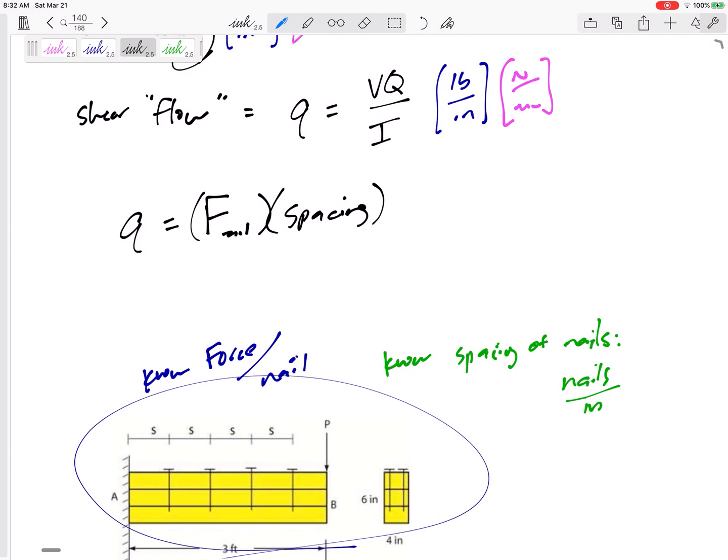Let me do pounds per inch. If my q is the VQ over I, it could equal force per nail times the spacing of the nails. The force per nail would be pounds per nail. The spacing would be how many nails per inch.